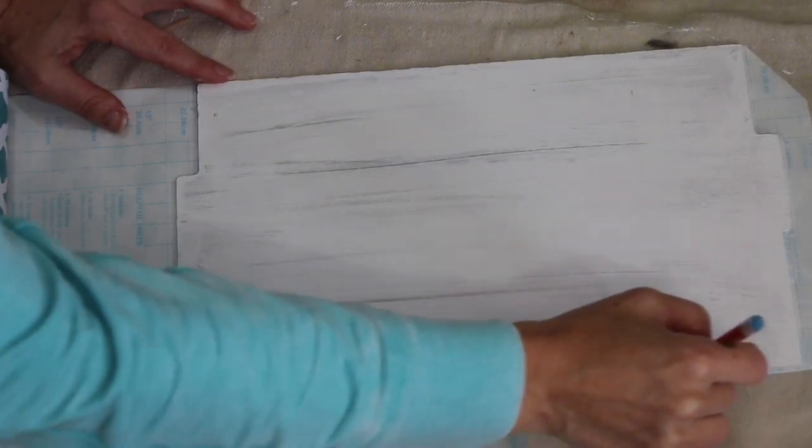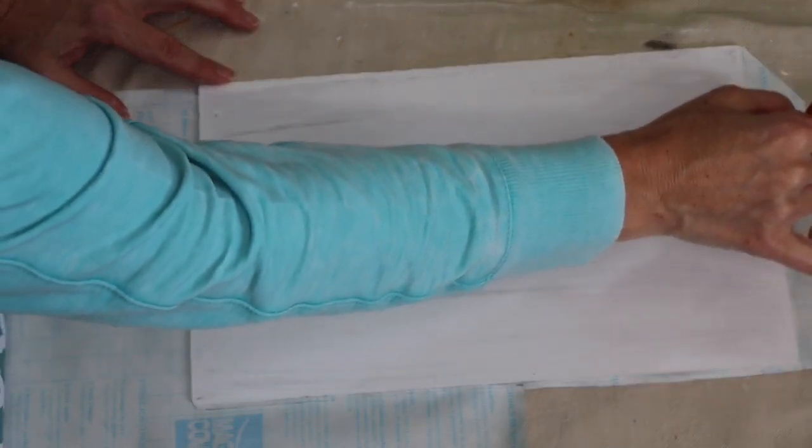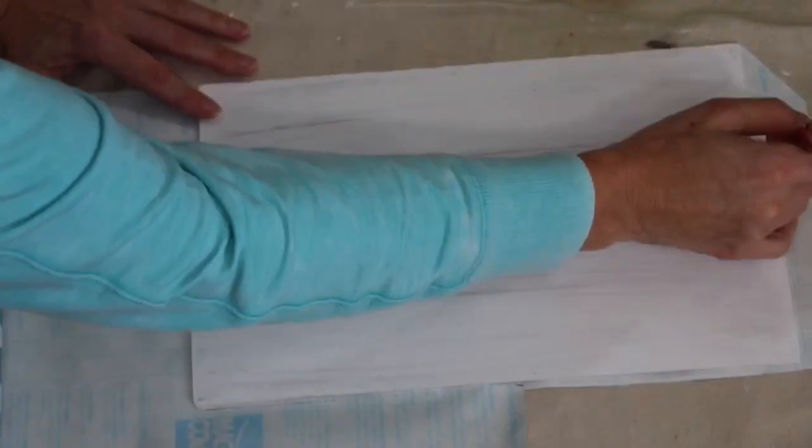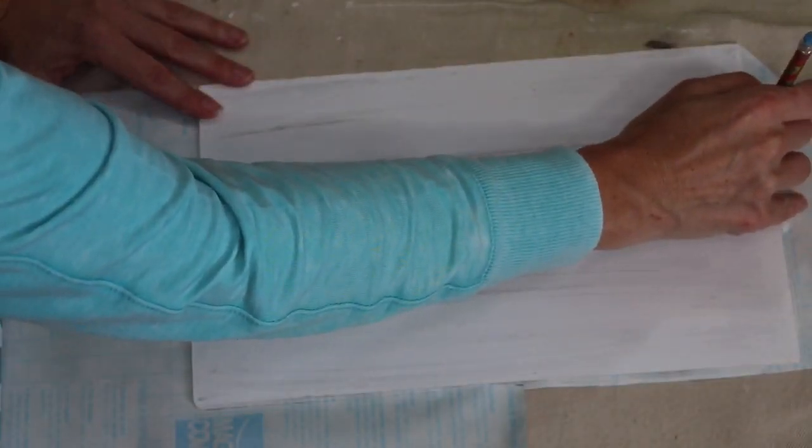Once my paint on my sign was dry, I went ahead and I took my contact paper and I traced it out kind of loosely because I can always trim it up in the end. I just wanted to get a nice tracing so I knew exactly generally the idea of what I wanted and where I wanted it placed.